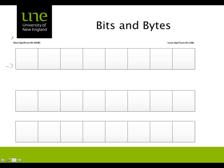Why are they called least significant bit and most significant bit? Let's put a 1 in our least significant bit and start doubling each bit. So our least significant bit has a value of 1 and our most significant bit has a value of 128.